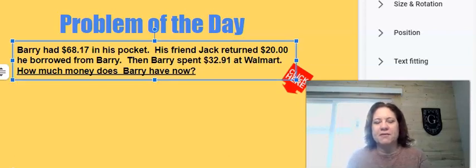One more time. Barry had $68.17 in his pocket. His friend Jack returned $20 he borrowed from Barry. Then Barry spent $32.91 at Walmart. How much money does Barry have now?